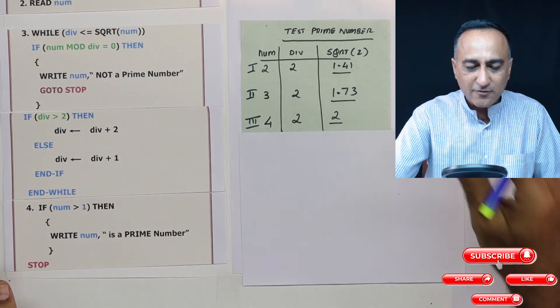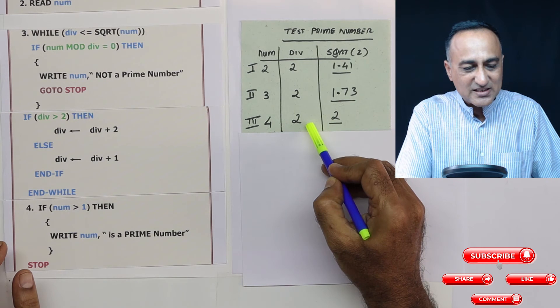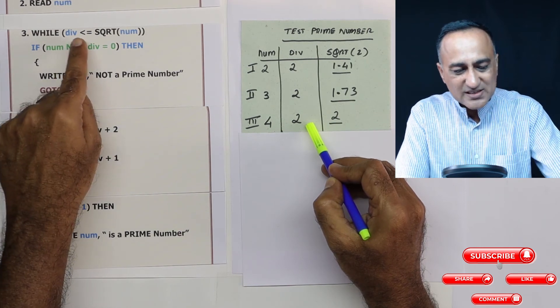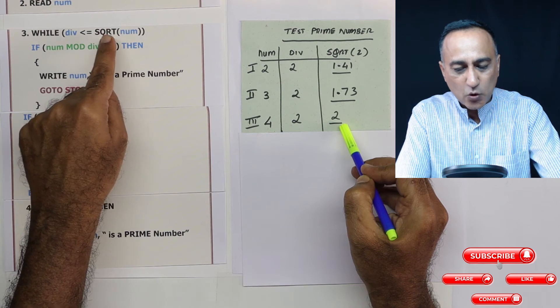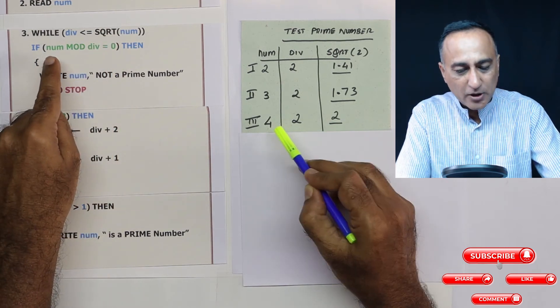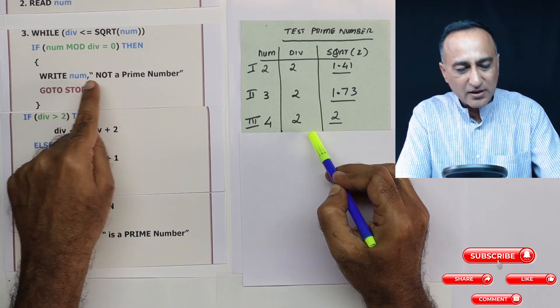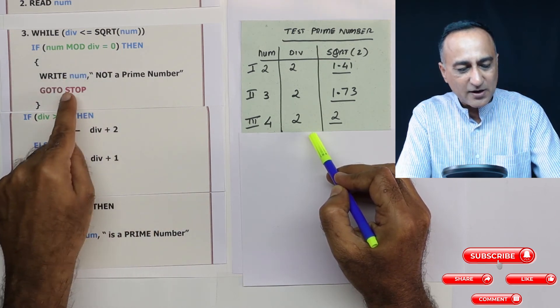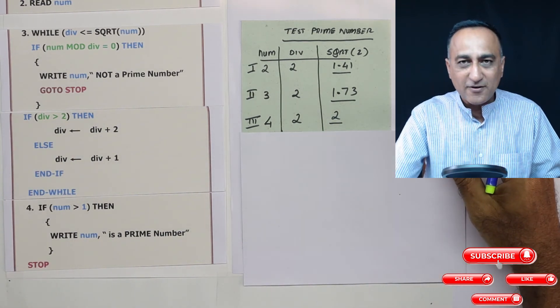Let's take the next number which is 4. Since I am reading the number as 4, divisor is 2. 2 is less than or equal to square root of 4 happens to be 2, so this is okay. So I will come into the loop. 4 mod 2 is equal to 0, so it will say 4 is not a prime number and it will come to stop. So it has dealt with 2, 3 and 4 perfectly.